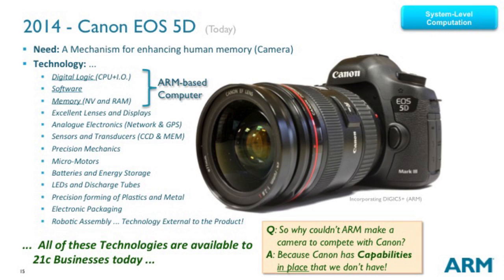Today's camera is still a Canon camera — 2014, just 17 years later — still a mechanism for enhancing human memory, but the technologies incorporated in it are very different. Excellent lenses are still there, but now there's analogue electronics that were never there before, sensors and transducers, precision mechanisms, micromotors. And what really gets me is it's robotic assembly — because you can't assemble this camera by hand; it's too precise and requires dexterity which can't be achieved any other way. The creation of this camera has technology which is not embodied in the camera itself — you couldn't have it without the manufacturing mechanism to support it.